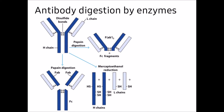When an antibody is digested with the pepsin enzyme, it cleaves below the hinge region, below the disulfide bond. You get an F(ab')2 fragment plus an Fc fragment, but the Fc fragments are recovered in small peptide form. This is all about pepsin digestion.